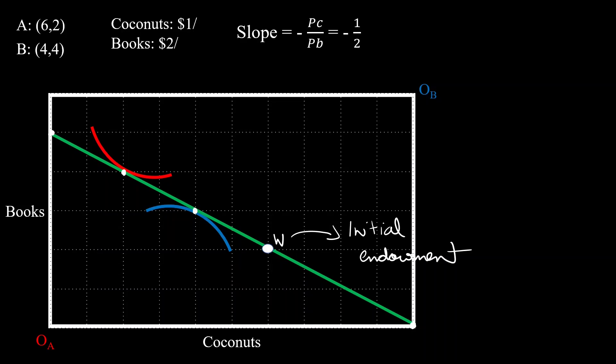Now let's check if the market is in equilibrium. For the market to be in equilibrium, the total amount of goods A and B want should be equal to the total amount of goods available inside the Edgeworth box. Let's put it another way. The two agents should exhaust all the goods inside the box.